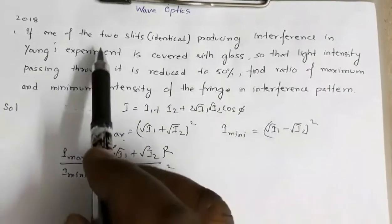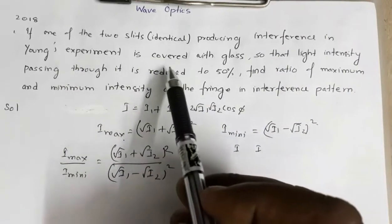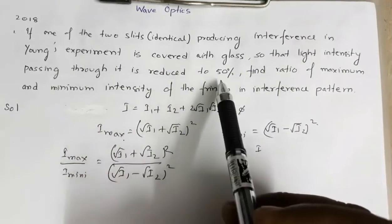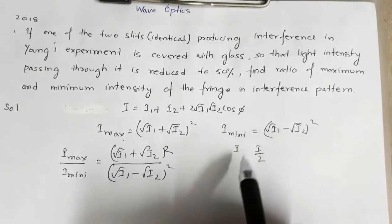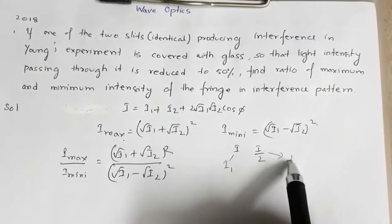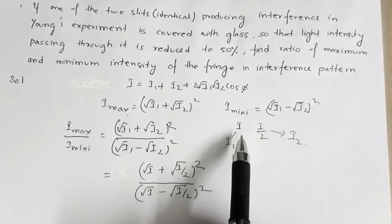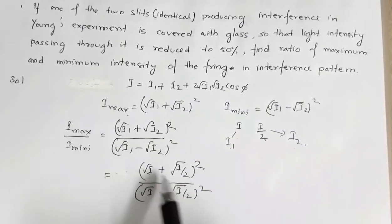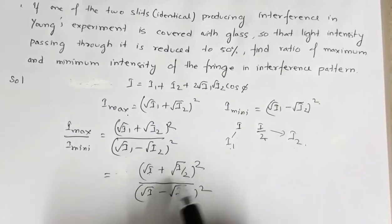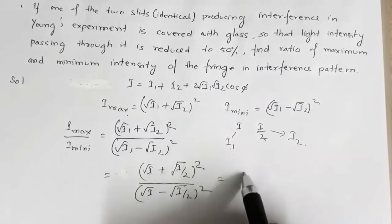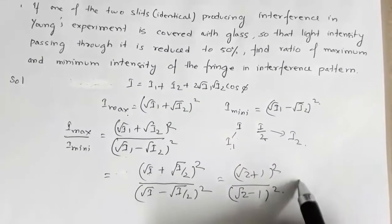Initially the two slits were identical, so they have the same intensity i and i. Then one slit is covered with glass so the intensity is reduced by 50%, making one slit i and the other i/2. Substituting i1 = i and i2 = i/2, we get (√2 + 1)² / (√2 − 1)². This is the required answer.